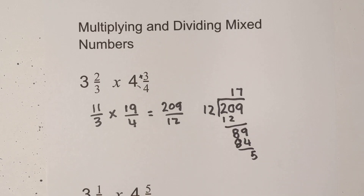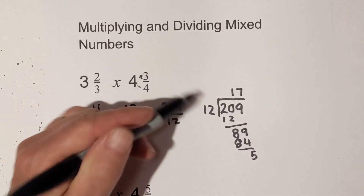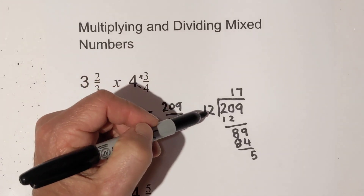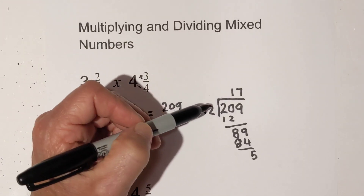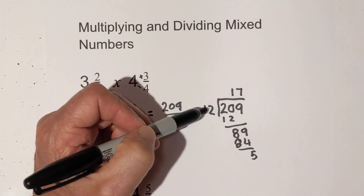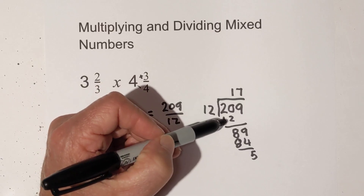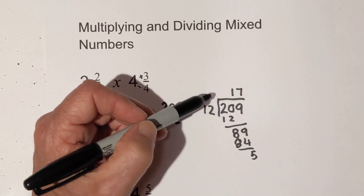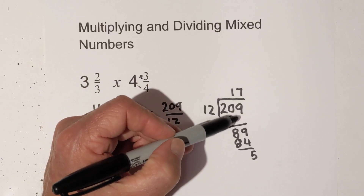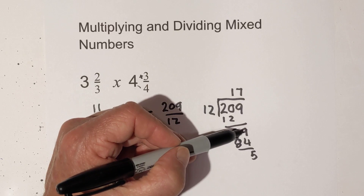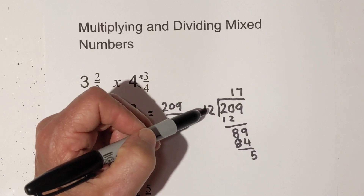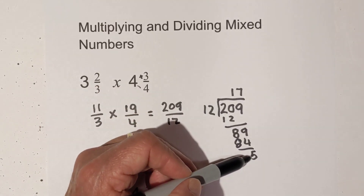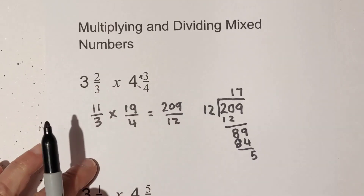I went ahead and wrote down some things to speed it up a little bit. Twelve goes into twenty-one one time; one times twelve is twelve, so you have eight left over. Bring down the nine — twelve goes into eighty-nine seven times, and then you have a remainder of five.